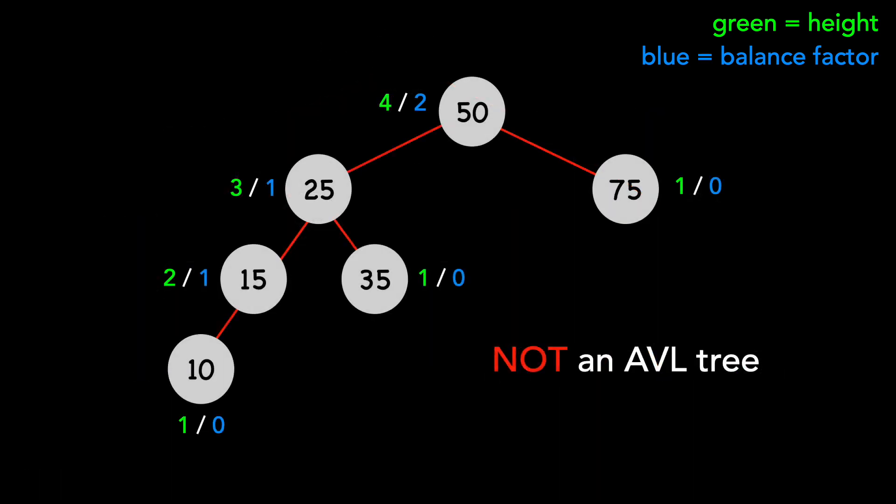Here's an example of a tree that is not an AVL tree. As you can see, it has a node with a balance factor greater than 1.